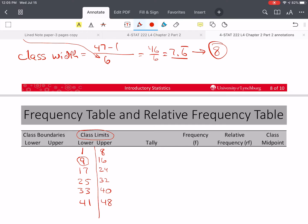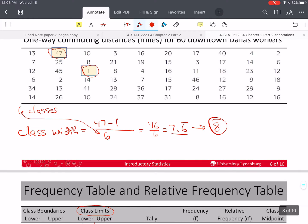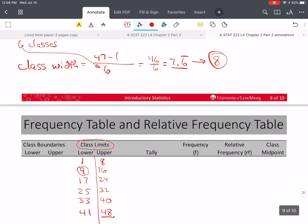And my lower class limit of the first class needs to be equal to the minimum value, which is one. And this last number here needs to be at least as large, if not larger, than the maximum value in my data, which in this case is 47. So this is 48. So all the values are going to fall within one of these classes.